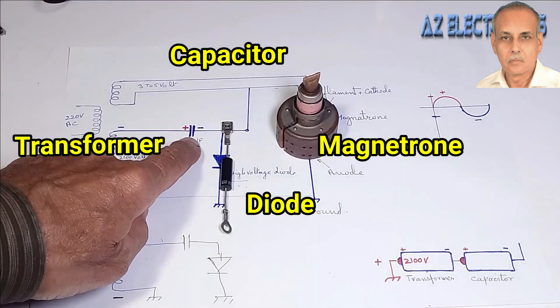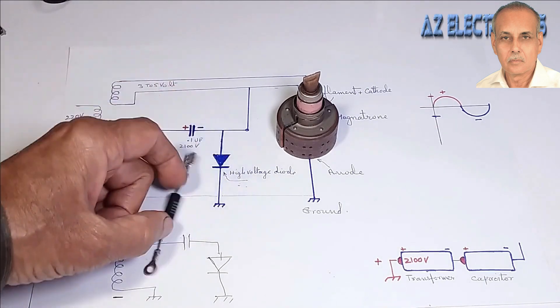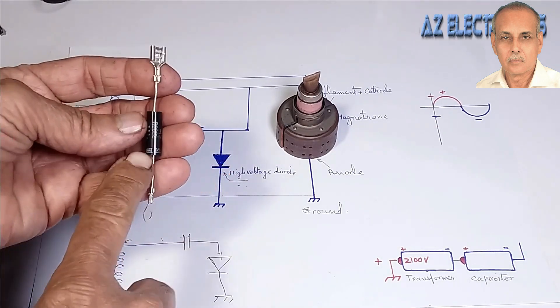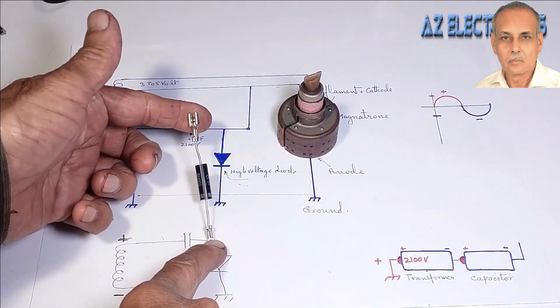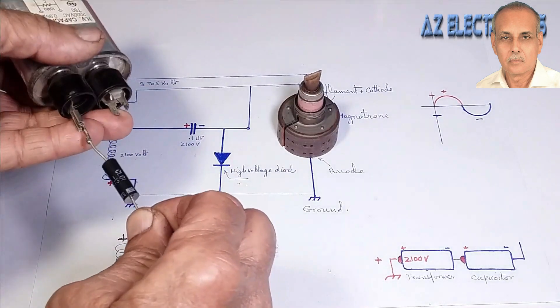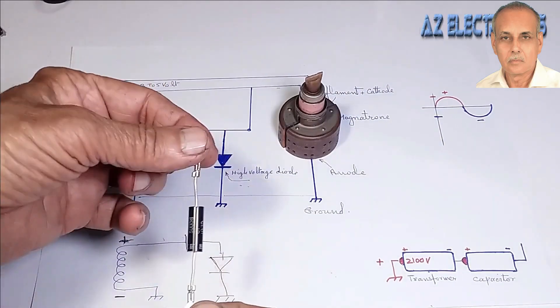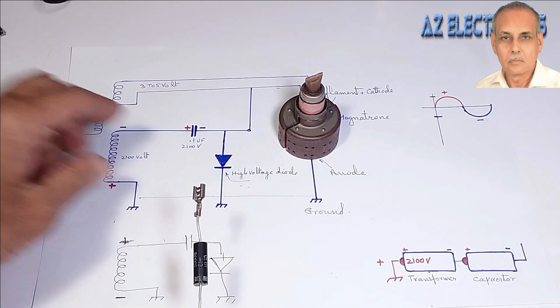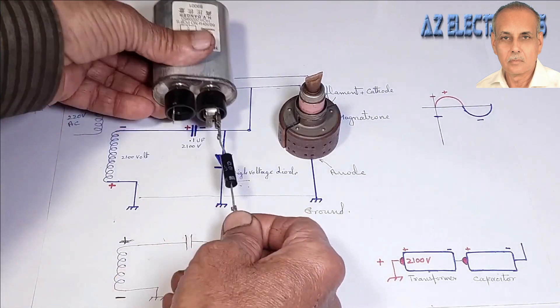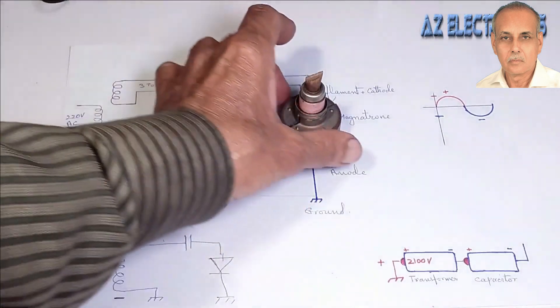How does a magnetron generate a wave and how does voltage doubling happen? This is a transformer. A microwave oven has a transformer which works in step-up mode. This is the secondary coil of the transformer where 2100 volts are generated, while the primary coil is supplied with 220 volts.